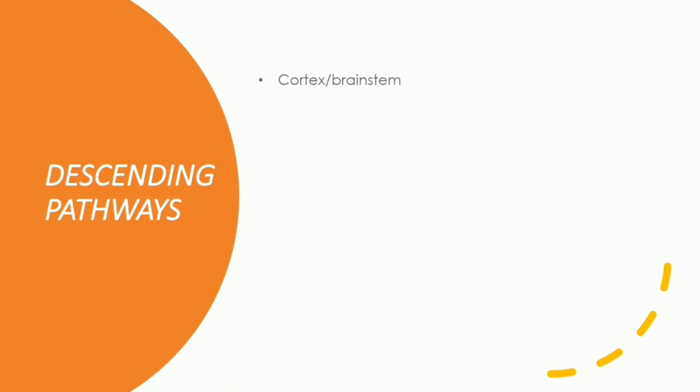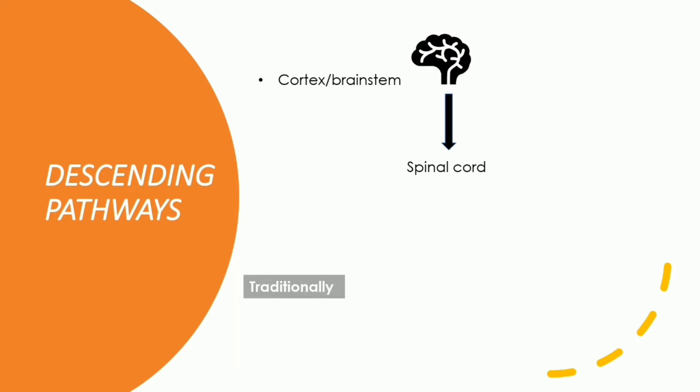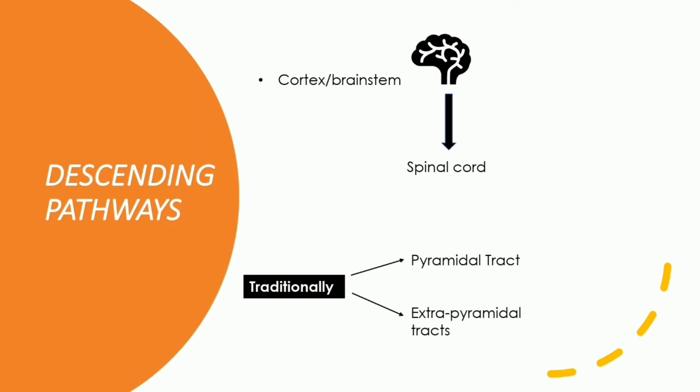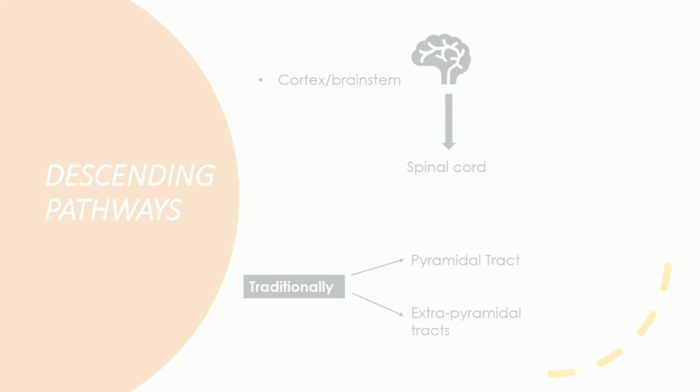Now, what is a descending pathway? Fibers arising from the cortex of the brainstem are descending downwards and ending in the spinal cord, and this comprises the descending pathway. Traditionally, we classify descending pathways into two groups: the pyramidal tract and the extrapyramidal tracts.